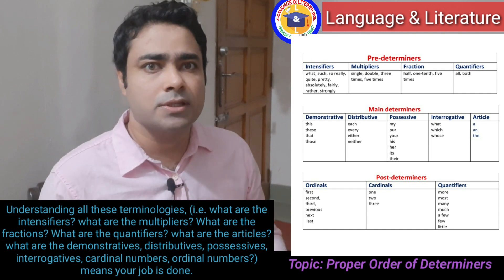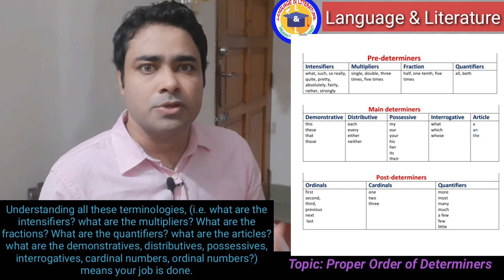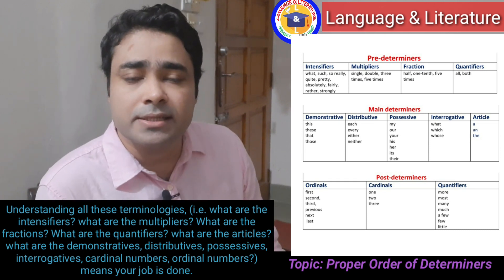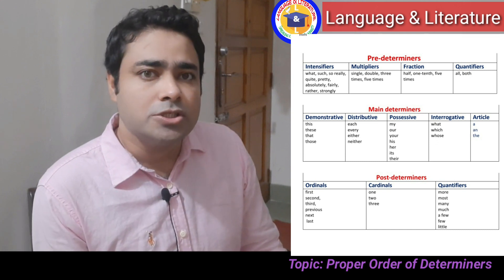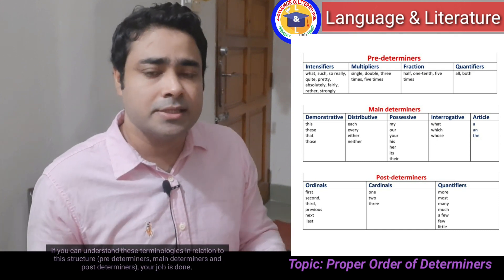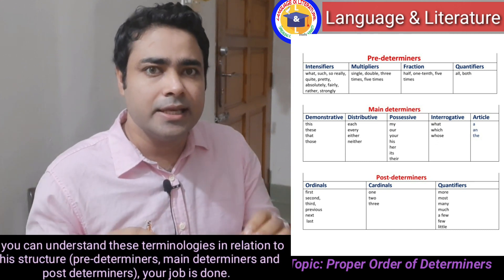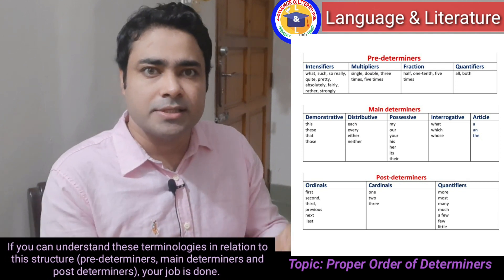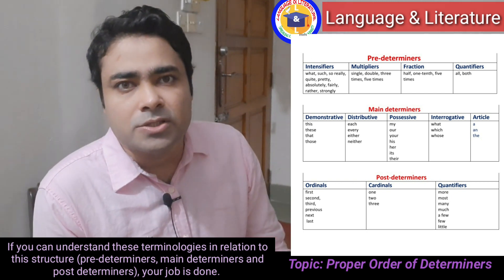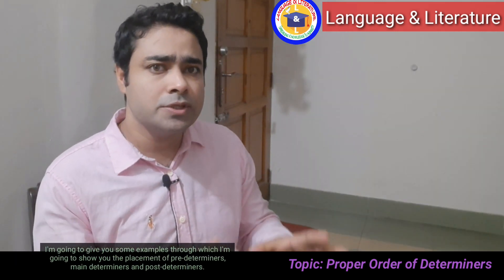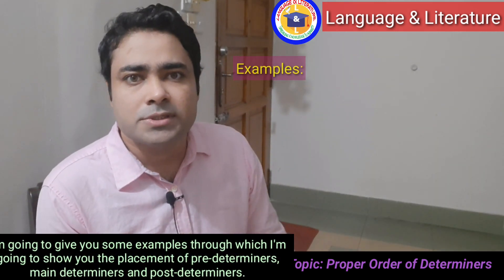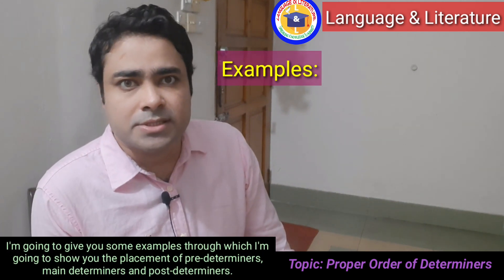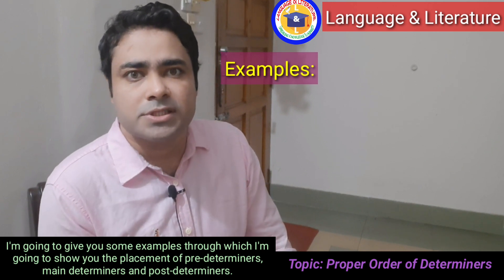Understanding all this terminology is key — what are intensifiers, multipliers, fractions, quantifiers, articles, demonstratives, distributives, possessives, interrogatives, cardinal numbers, ordinal numbers. If you can understand these terminologies in relation to the structure — predeterminers, main determiners, and post determiners — your job is done. I am going to give you examples to show the placement.